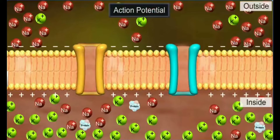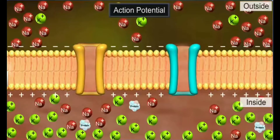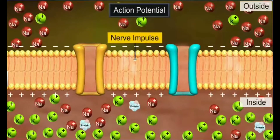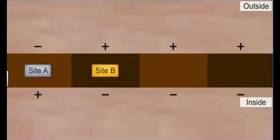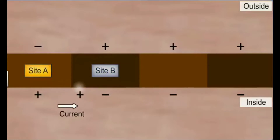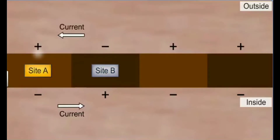The electrical potential difference across the plasma membrane at site A is called the action potential. This action potential travels as a wave of depolarization along the length of the nerve fiber in a particular direction and is called the nerve impulse. At site B, the axon membrane has a positive charge on the outer surface and a negative charge on the inner surface. As a result, a current flows on the inner surface from site A to site B, and on the outer surface from site B to site A, completing the circuit. This reverses the polarity at site B and an action potential is generated.